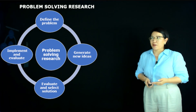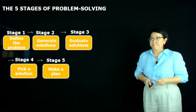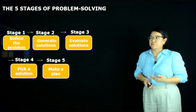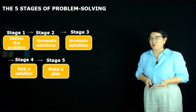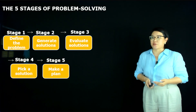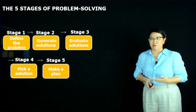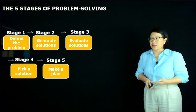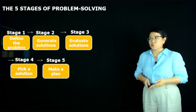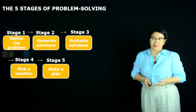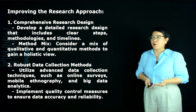Problem-solving research consists of five stages. Stage one: define the problem. Stage two: generate solutions. Stage three: evaluate the solutions. Stage four: select a solution. Stage five: make a plan and implement it.